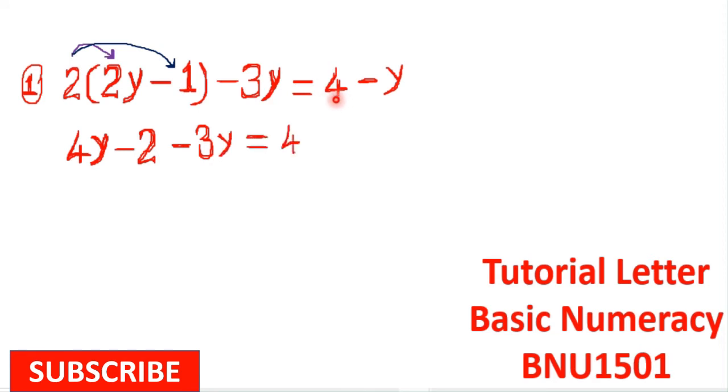From there, we are going to group the like terms. This -3y and this 4y are both written in terms of y, so I will write these two terms close to each other.